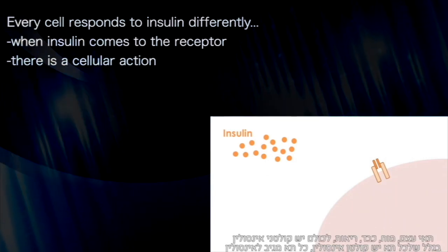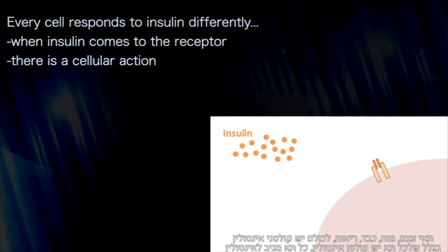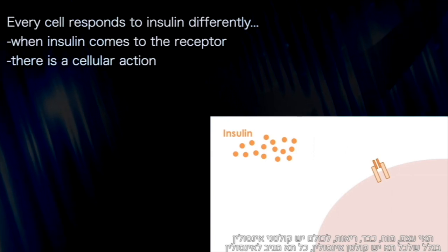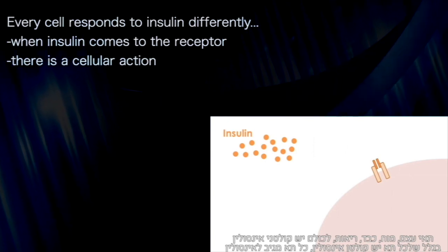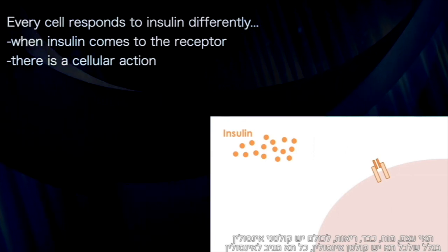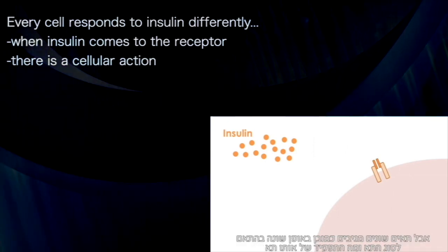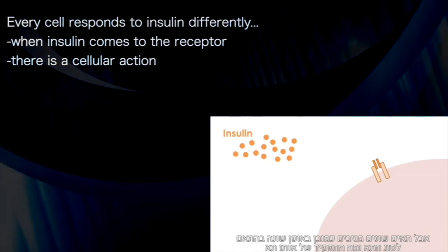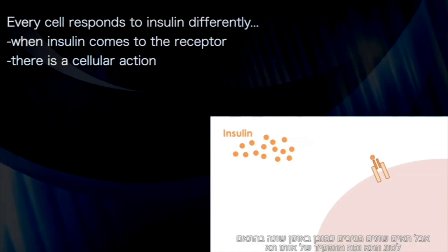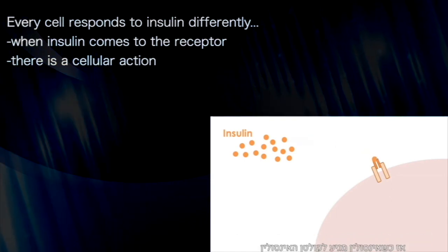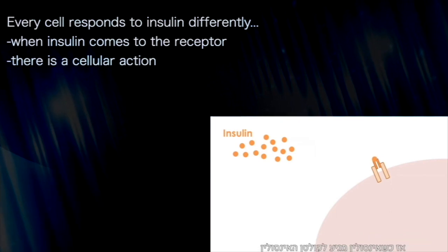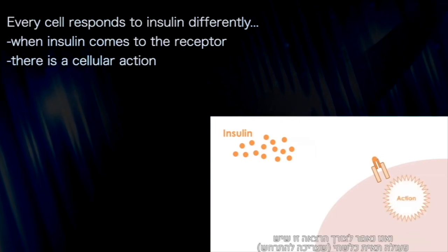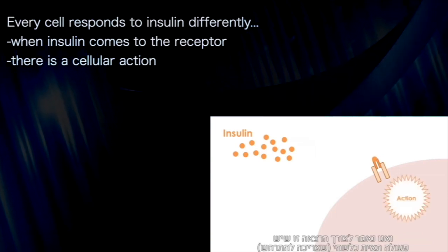Because every cell has an insulin receptor, every cell responds to insulin. But the cells respond differently based on what the cell is and what its job is. So when insulin comes to an insulin receptor, there is a cellular action.